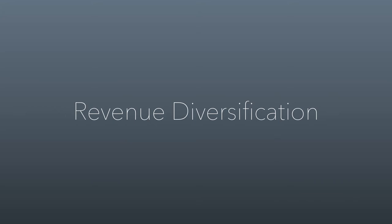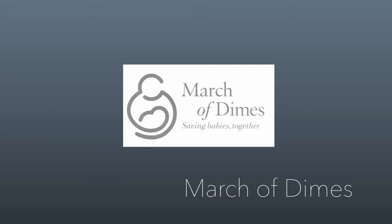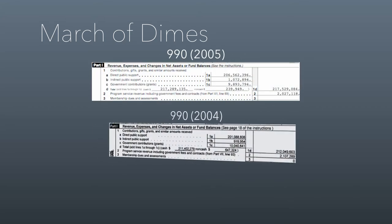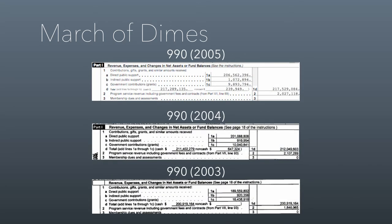Let's talk about diversifying revenue. To illustrate these concepts, I'm going to pull up some numbers from the March of Dimes — specifically 990 information from 2005, 2004, and 2003. Now, if that seems like really outdated information, I'm using it because it helps illustrate a cool principle. The numbers are just kind of perfect for this, and you'll see why in a minute.